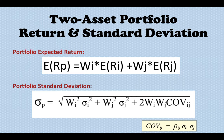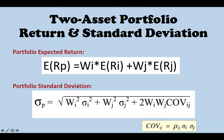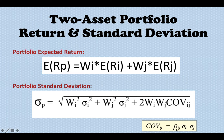First I want to talk about the two-asset portfolio return and standard deviation, which I already covered in detail in another video. Basically, if I hold two stocks in my portfolio, the return is equal to the weighted return of each stock, and the portfolio standard deviation is equal to this formula based on their weights. A very important element here is the covariance, which equals the correlation coefficient times the two standard deviations.